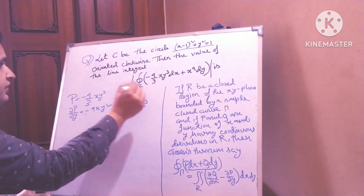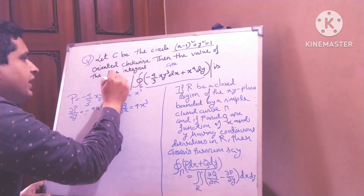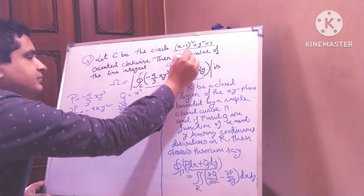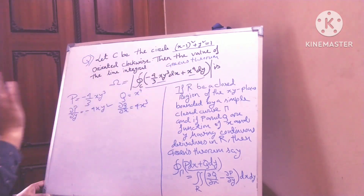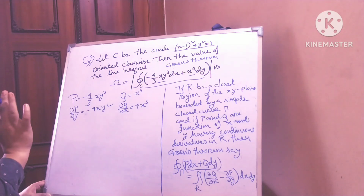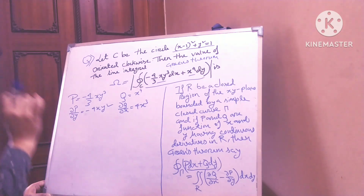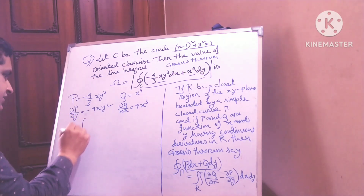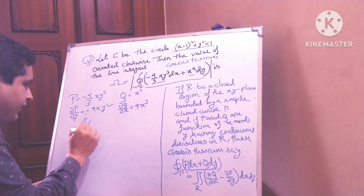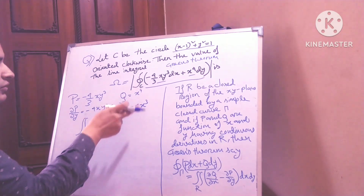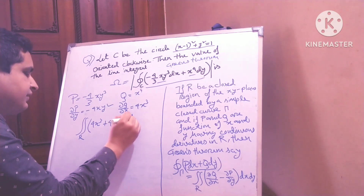Now del Q / del x — so this equation I can apply Green's Theorem. I can write this as over Omega. You must remember that P and Q are continuous — obviously this is continuous, so I can use Green's Theorem. Now it is double integral over R of 4x cubed plus 4xy squared, dx dy.